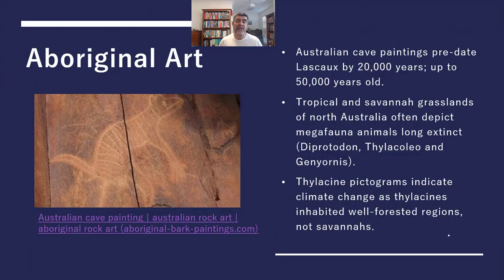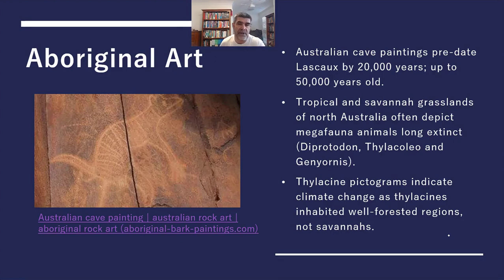When we look at Australia, we can see cave paintings that can date back to somewhere around 50,000 years ago, which predates Lascaux by about 20,000 years. This provides us a very good long history of human habitation on the Australian continent. In a lot of areas around the tropics and savannah grasslands in the northern part of Australia, we see some cave paintings that depict some of the megafaunal animals that have been long extinct — some as long as 30,000 years ago.